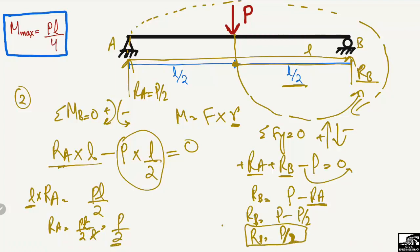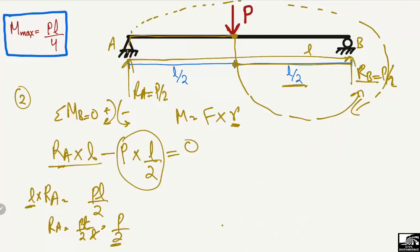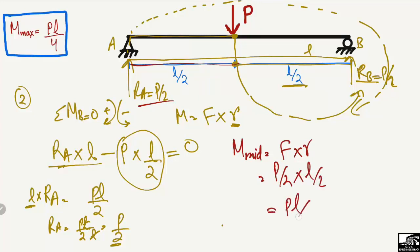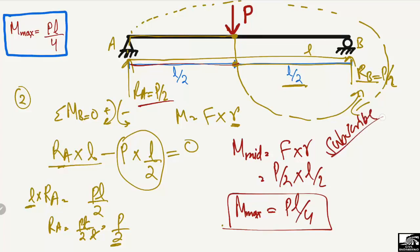Now to find the maximum moment at the midpoint, we again use moment = force × distance: M = (P/2) × (L/2) = PL/4. This is the maximum moment at the midpoint of the beam. We hope you understand how to derive this equation for the maximum bending moment at mid-span for a concentrated load. Please subscribe to our channel for daily civil engineering videos. Thank you for watching.